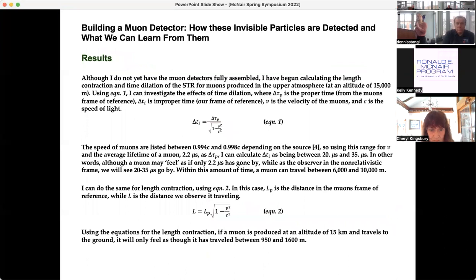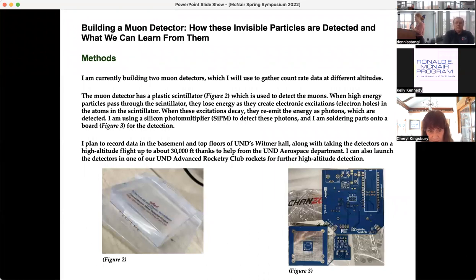The plastic scintillator, the picture on the left, that is how the muons are detected. They'll come into the plastic scintillator, they'll create electronic excitations in atoms in the scintillator. And then when the electrons decay back into their ground state orbital, it'll release photons which can then be detected by a silicon photomultiplier. Along with the scintillator part of the detector, there's a board pictured on the right, and I'll be soldering a lot of parts onto that board for the detector.